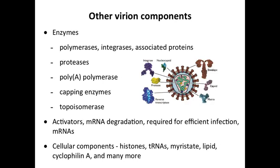In virus particles, there are a bunch of other things important for virus replication. There can be enzymes of all sorts — various polymerases, proteases, enzymes that cap messenger RNA, topoisomerases, activators of transcription, things that degrade mRNA, histones, and tRNAs. Many, many things have been found inside virus particles. I don't want you to leave thinking it's just structural proteins and some glycoproteins, and we will touch on a lot of these as we continue our discussion.